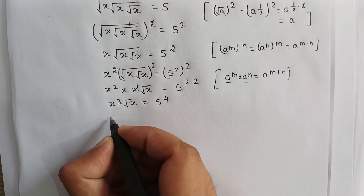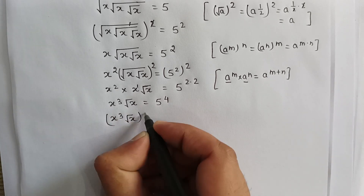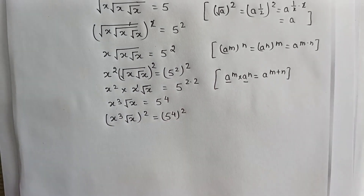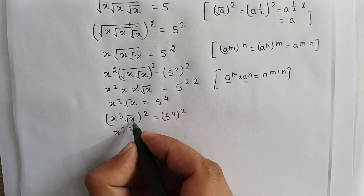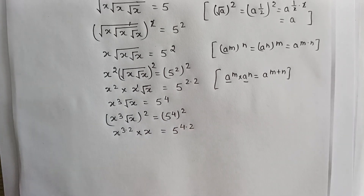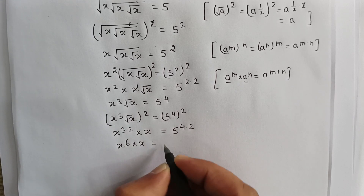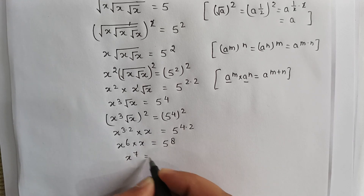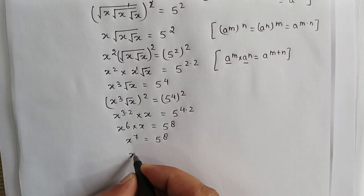Squaring both sides again: (x³ · √x)² = (5^4)². This gives x^(3×2) · x = 5^(4×2), so x^6 · x = 5^8, which means x^7 = 5^8.